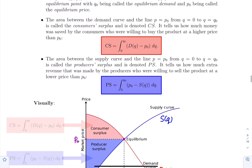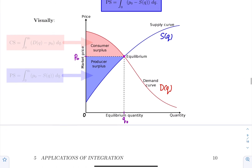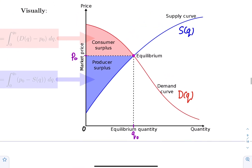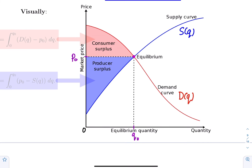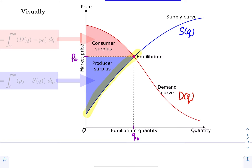The initial setup is the following. You start with a demand curve and a supply curve. A demand curve depicts the price per unit, P = D(Q), for a product at which the consumer will agree to purchase Q units. Typically, the demand curve is the graph of a decreasing function. A supply curve depicts the price per unit, P = S(Q), for a product at which the supplier will agree to sell Q units. Typically, the supply curve is the graph of an increasing function.